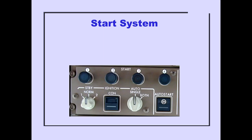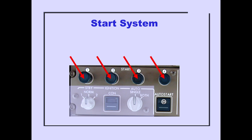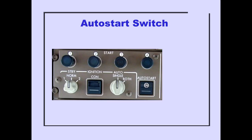Controls for the start system are located on the overhead panel. They consist of four start switches and an auto start switch. Pushing the auto start switch on arms auto start. Pushing the switch off selects manual start.